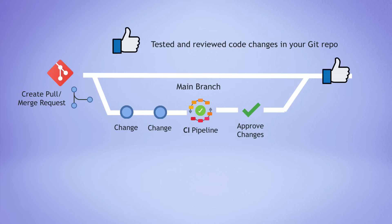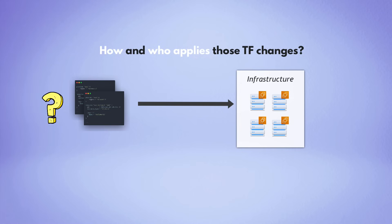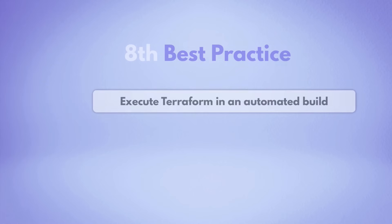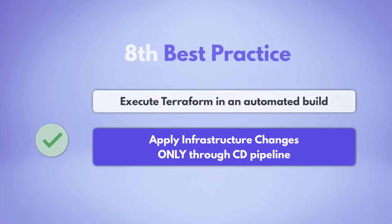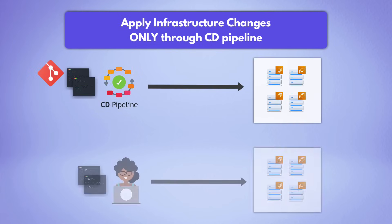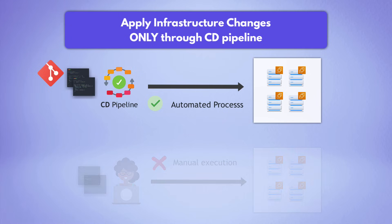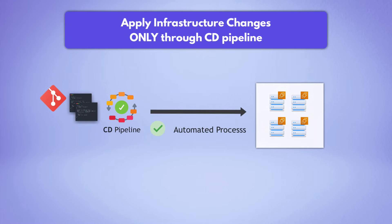So you have tested and reviewed code changes in your Git repository — now how do you apply them to the actual infrastructure? The final best practice is to execute Terraform commands to apply changes in a continuous deployment pipeline. Instead of team members manually updating the infrastructure by executing Terraform commands from their own computers, it should happen only from an automated build. This way, you have a single location from which all infrastructure changes happen and a more streamlined process of updating your infrastructure.